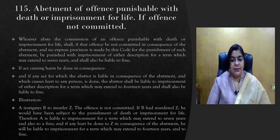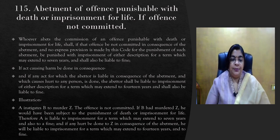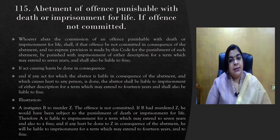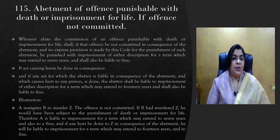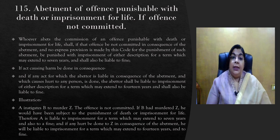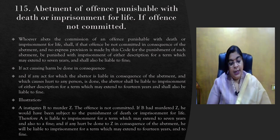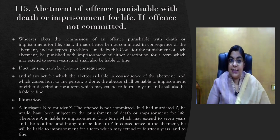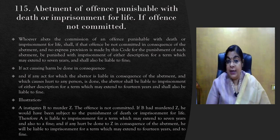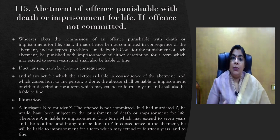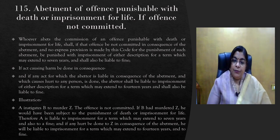In the second circumstance under Section 115, if a person abets another person to commit murder but no murder occurs, however the person suffers a serious injury as a consequence, then the punishment will be life imprisonment — that is, 14 years — with fine. So, if there is no injury, no harm, and no offense but the abetment is serious in nature, punishment is seven years. And if an attempt has been made and the person is injured in consequence, the punishment will be 14 years with fine.